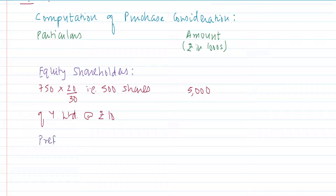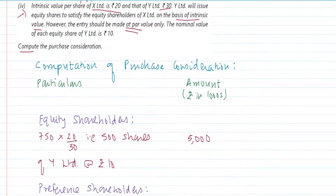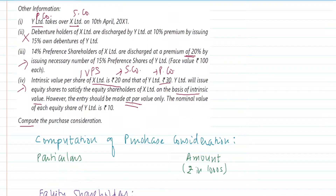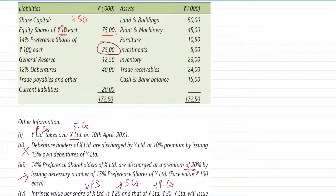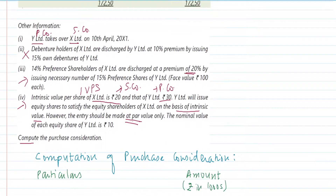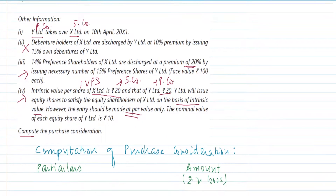Next, we consider the preference shareholders. What are we giving to the preference shareholders? As per information 3, they are being discharged at a 20% premium. The preference shares have a dividend rate of 15% and a face value of rupees 100 each in Y Limited.